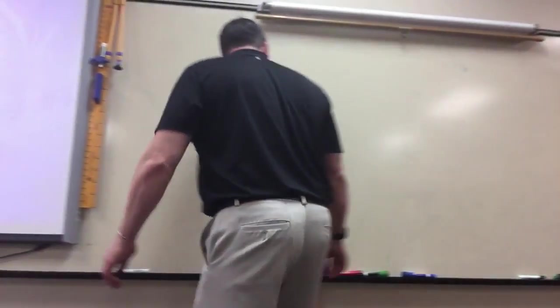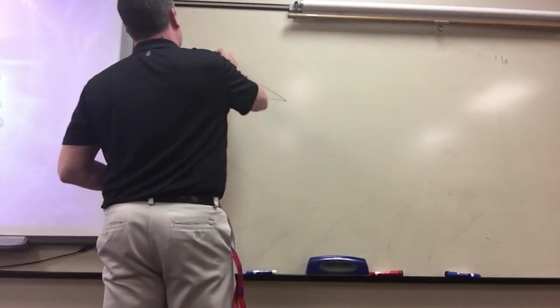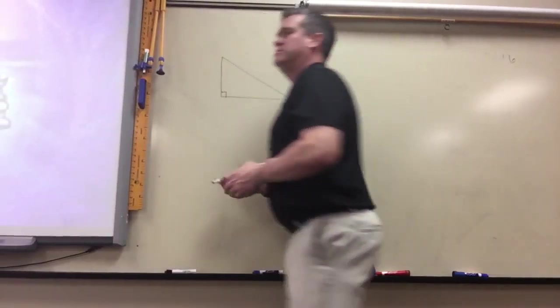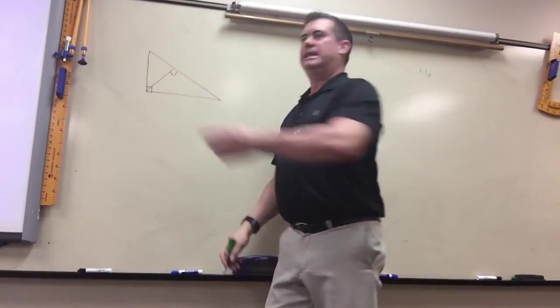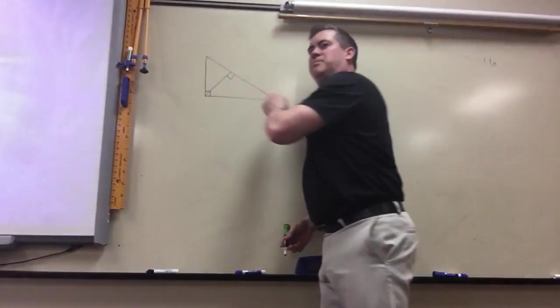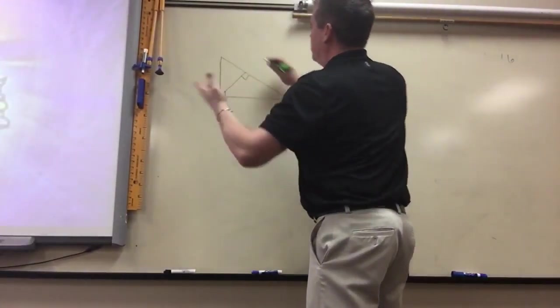On the right triangles. So remember the first section was if you've got a right triangle with an altitude in it, these three pieces are the geometric mean. So it's always going to be compared to this hypotenuse.